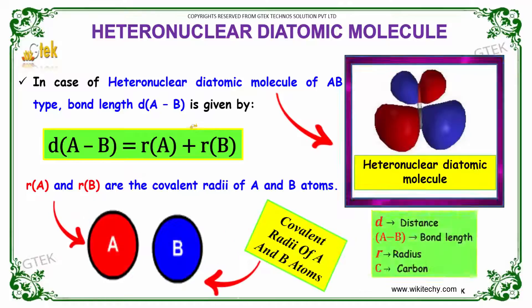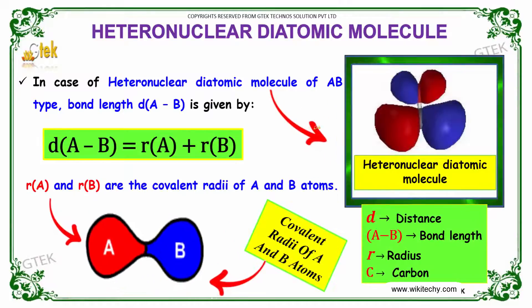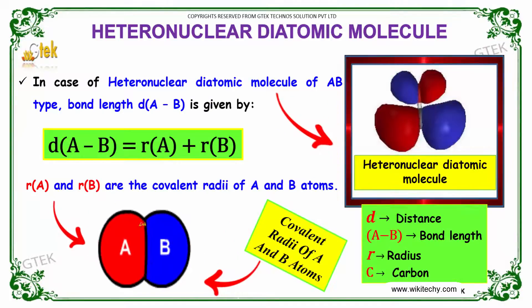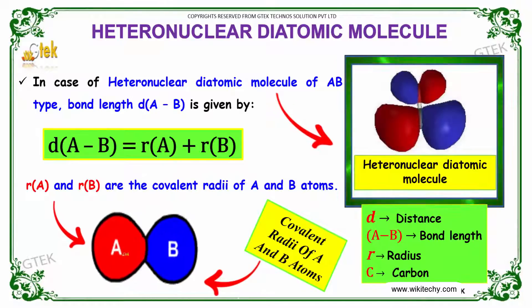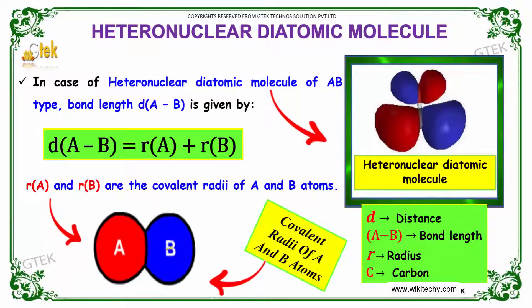In the case of a heteronuclear diatomic molecule of AB type, the bond length is given by the radius of A plus the radius of B.